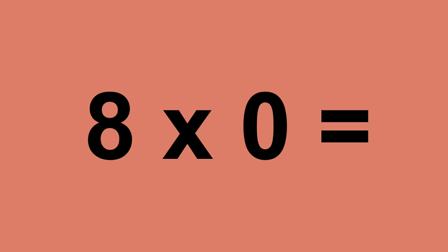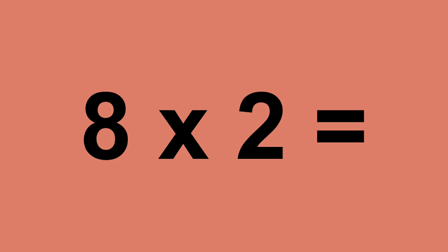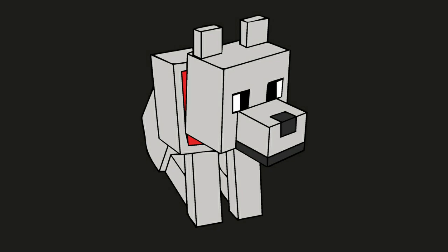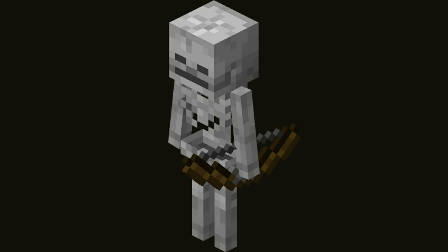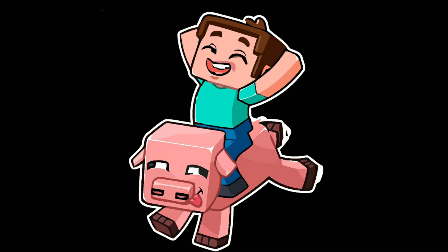8 times 0 equals 0. 8 times 1 equals 8. 8 times 2 equals 16. 8 times 3 equals 24. 8 times 4 equals 32. 8 times 5 equals 40. 8 times 6 equals 48.